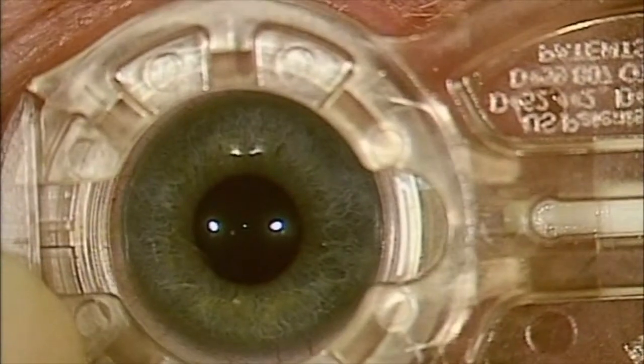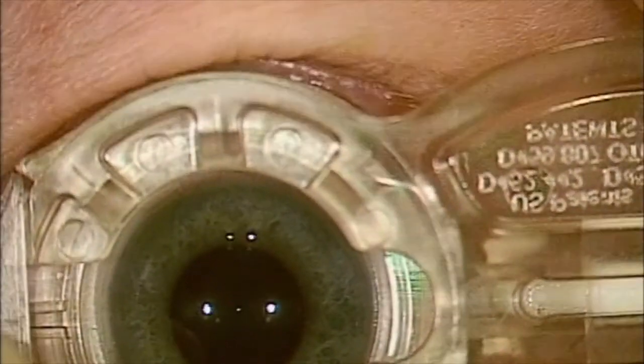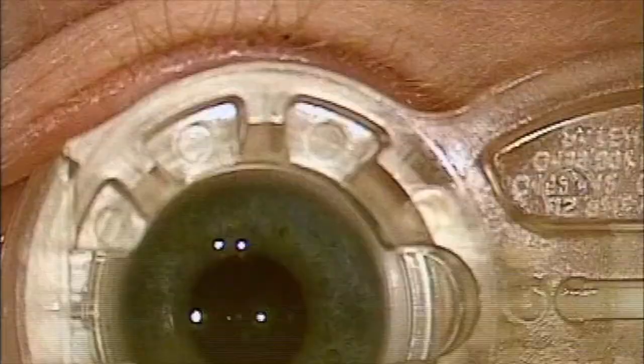You can just see it in the bottom left hand corner there to make sure you've got even apposition before you apply the vacuum, and then you're ready to dock.